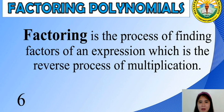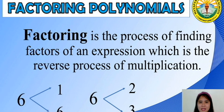What are the two numbers when multiplied with each other will result in 6 as the product? The answer is 1 and 6. What else? 2 and 3. So 1 and 6 are factors of 6, and 2 and 3 are also factors of 6.